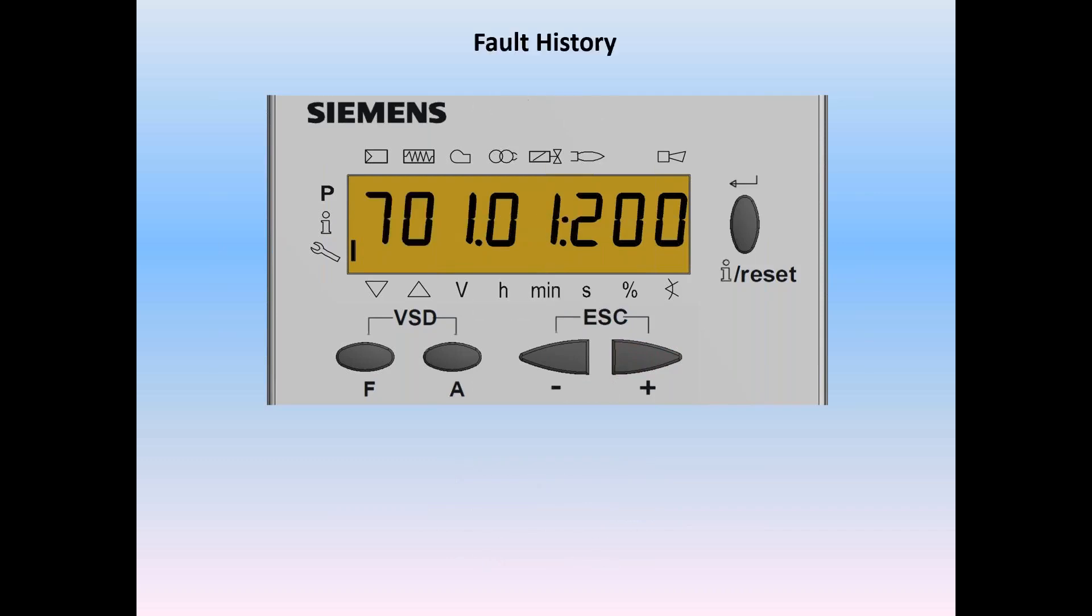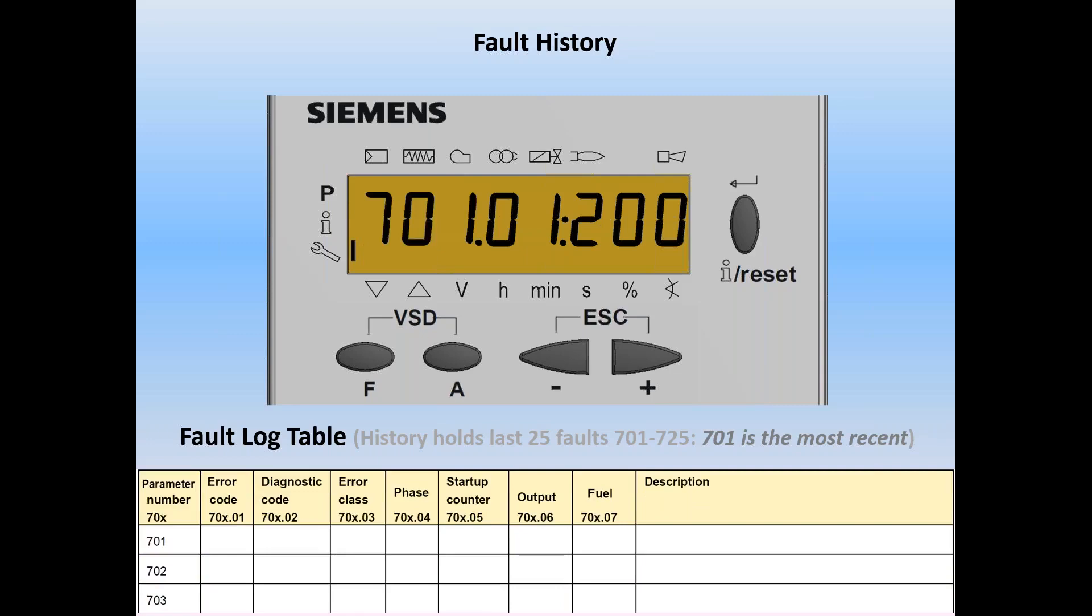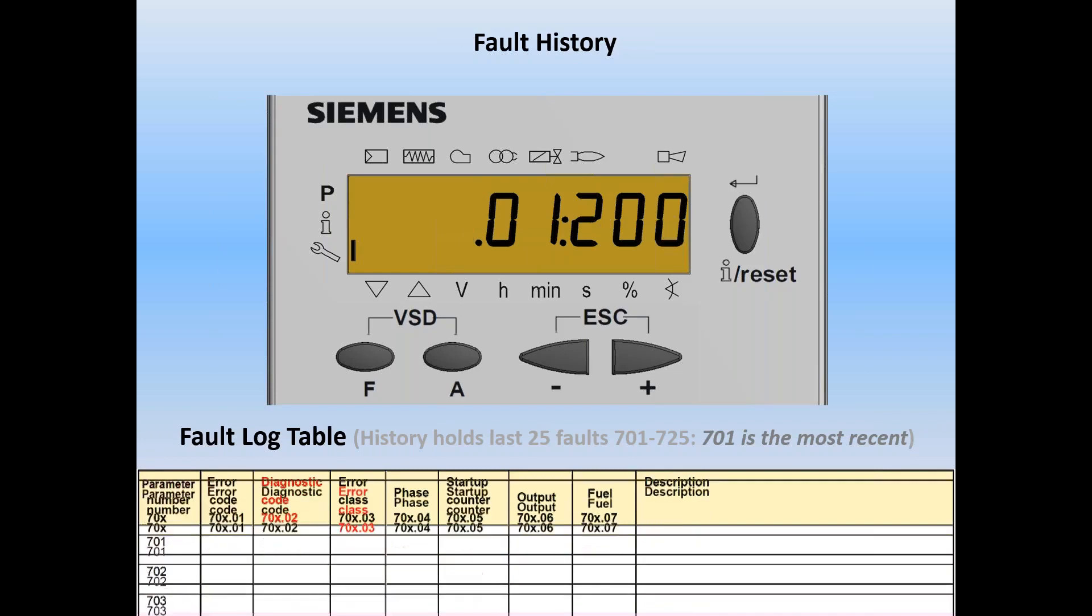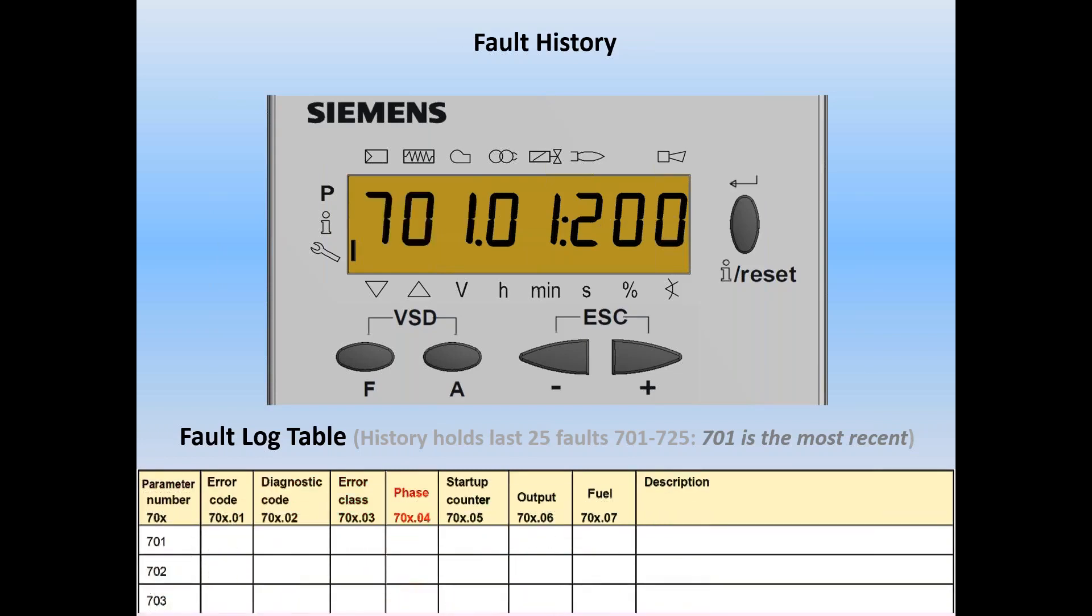Do a plus. And here we are. We're going to do a parameter number. In this case, 701. We're going to do error codes, which is index 01. Diagnostic code, index 02. A class, 03. The phase, 04. The start counter, 05. The output or firing rate, 06. And if you're equipped with a dual-fuel LMV36, it's going to tell us what fuel we're on, 0 or 1. And then we can add in our descriptions.